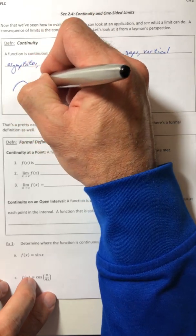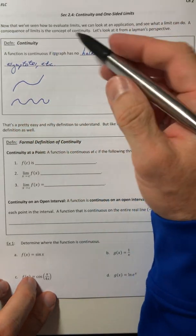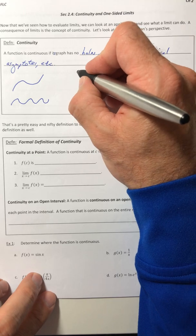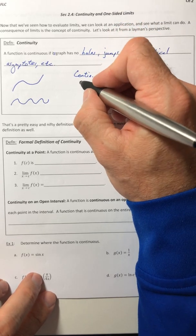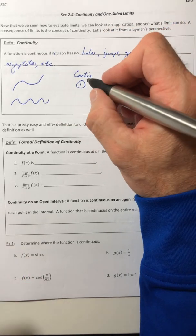So like a polynomial, certain trig functions, etc. Functions that are continuous. The big category would be all polynomials.